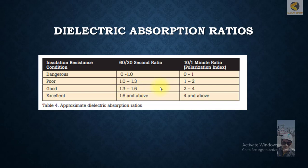If the second ratio is between 1.0 and 1.3, or the 10 minute to 1 minute ratio is between 1 and 2, then the insulation condition is fair.